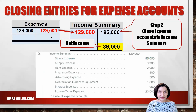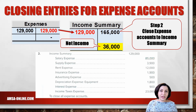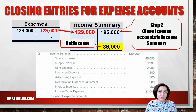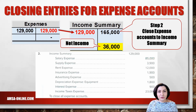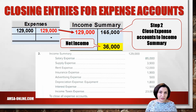Now let's close the expenses. Expense accounts have a debit balance. The account is closed by a credit to the expense account and a debit to income summary. A credit is made to each of the expense accounts for the balances, with a debit to income summary for the total of $129,000. After we credit the expense accounts, each expense account has a zero balance. Income summary is debited for $129,000 and now has a credit balance of $36,000, which represents the net income for the year.